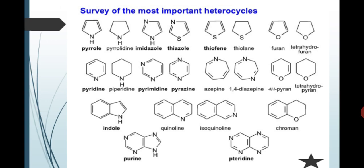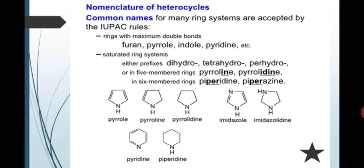Nomenclature of heterocycles: common names for many ring systems are accepted by IUPAC rule. The ring with maximum double bond and saturated ring system means prefixes are dihydro, tetrahydro, or perhydro.